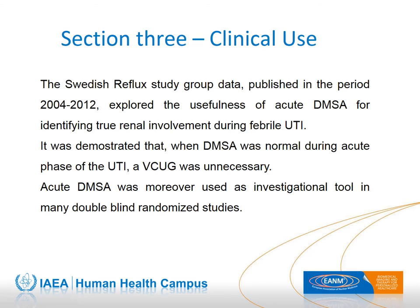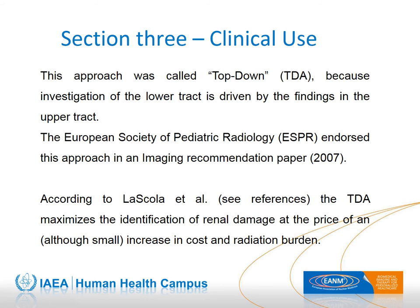Studies have established the usefulness of acute DMSA for identifying true renal involvement during febrile UTI. It was demonstrated that the use of acute DMSA as a screening tool during febrile UTI makes it possible to avoid unnecessary VCUG. This approach was named the top-down strategy — looking first at the upper tract (top), and then at reflux (bottom) only if the top is involved. This approach is endorsed by the European Society of Pediatric Radiology and, compared to other guidelines, maximizes identification of renal damage. The older strategy that looks for reflux first is named bottom-up.